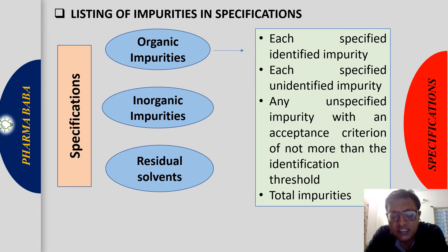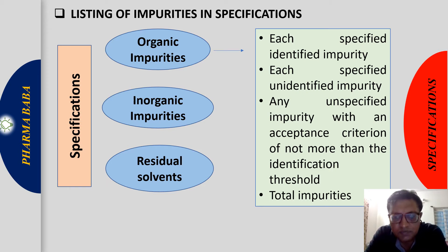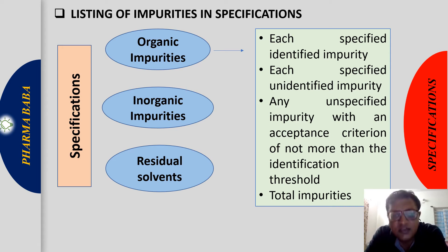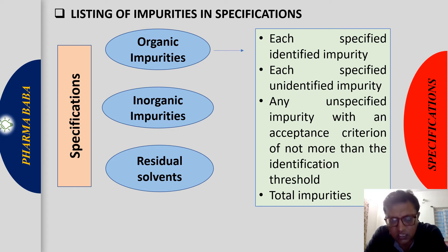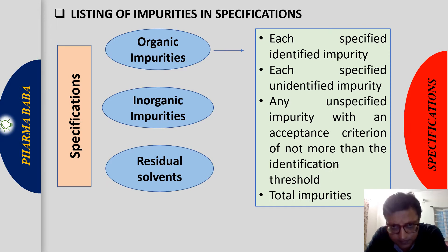Impurities are unwanted substances in the drug substance, controlled by our specification. Our control strategy, meaning our specification, should include organic impurities, inorganic impurities, and residual solvents. For organic impurities, the specification should include each specified identified impurity — meaning an impurity whose structure is known.